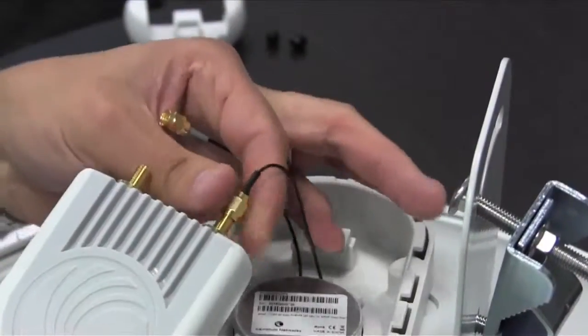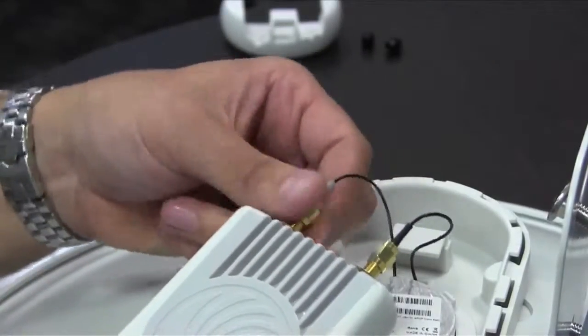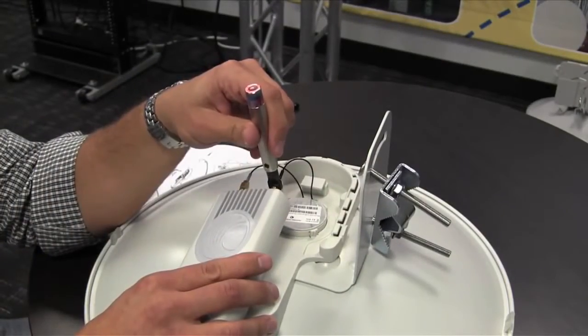Attach the black cable to the right side and the gray cable to the left side. Tighten the SMA connector to 1 Nm.